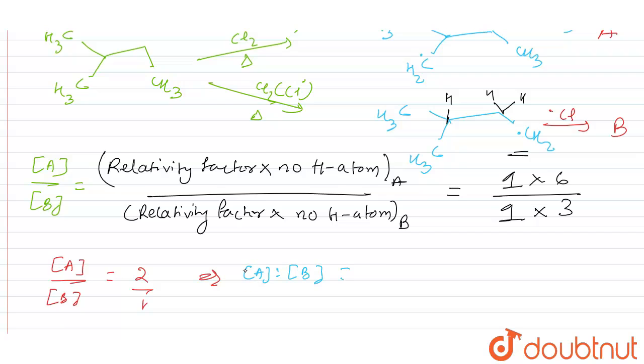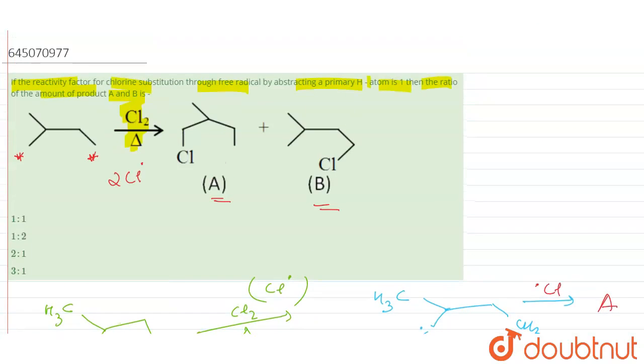This implies the ratio of A is to the ratio of B is going to be equal to two is to one. So the correct answer for this question would be two is to one. Let's check the options which we have. It's option number C, we have two is to one. So this will be the correct answer for this question. Thank you.